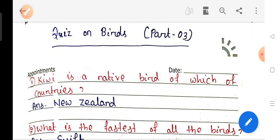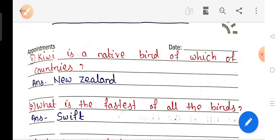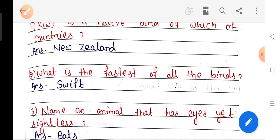Question number 1: Kiwi is native bird of which country? Answer New Zealand. Question number 2: What is the fastest of all the birds? Answer Swift.